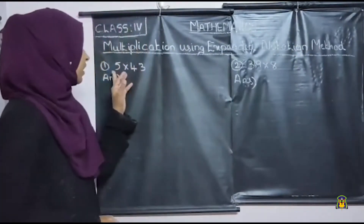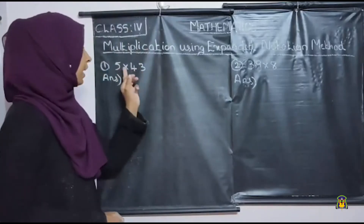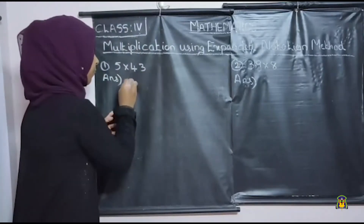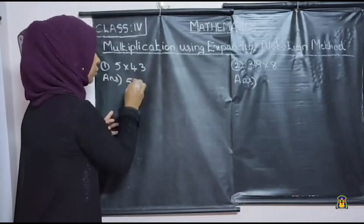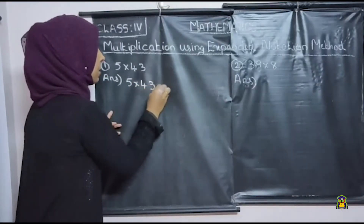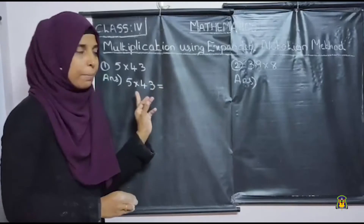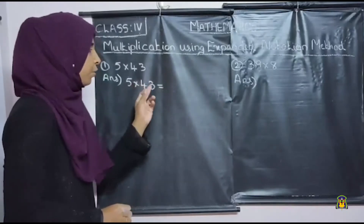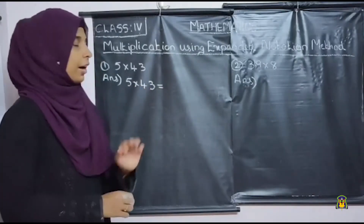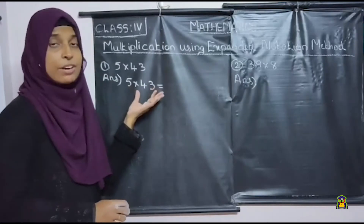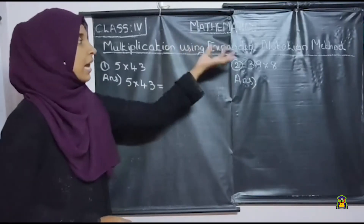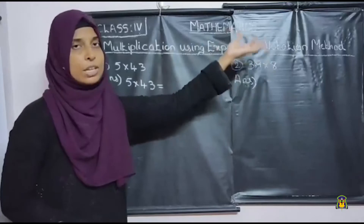So here, read the question: 5 into 43. Here 5 is a one-digit number and 43 is a two-digit number. We are going to find the product using the expanded notation method.